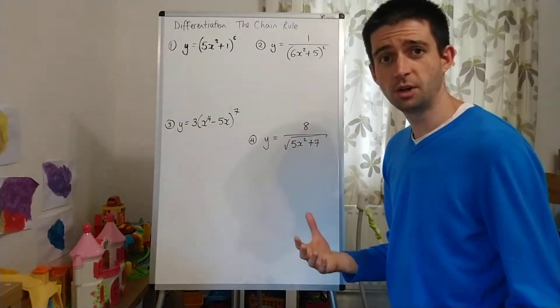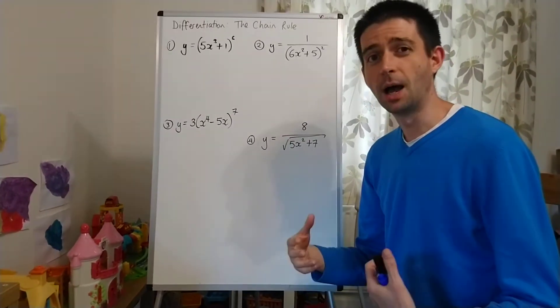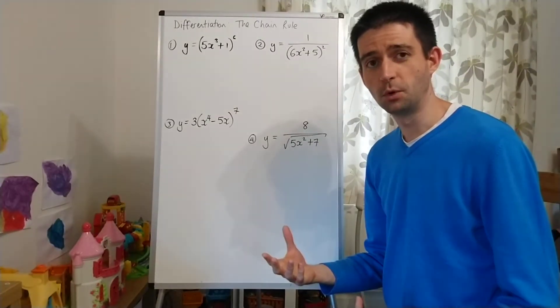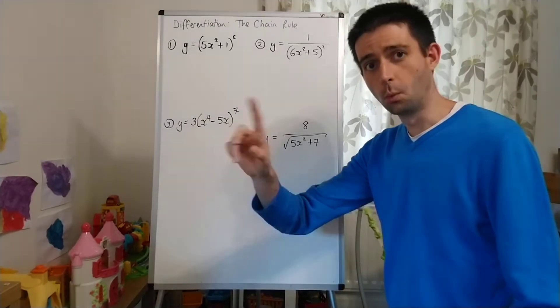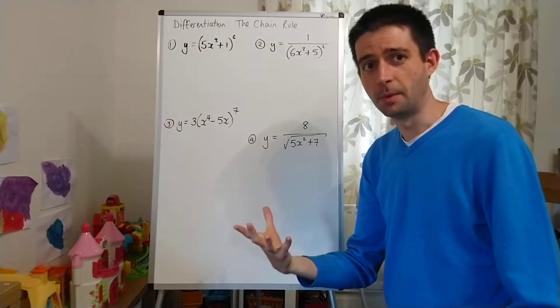So we established in the previous video, if you haven't watched it you probably need to, that to differentiate using the chain rule you power down one of the power and multiply by a differentiated bracket.